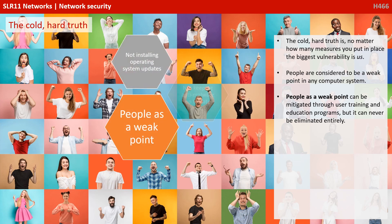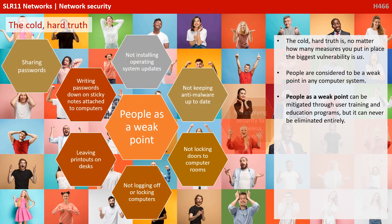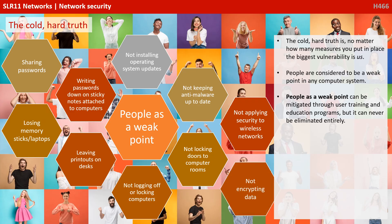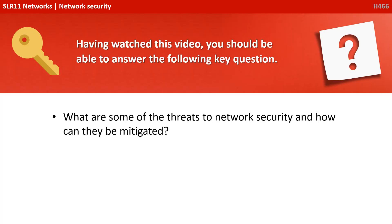Let's just take a step back here. Despite everything we've gone through, the cold hard truth is that no matter how many measures you put in place, the biggest vulnerability to a network or system is us. People are considered to be the weak point in a computer system. This can be mitigated through user training and education programs, but it can never be eliminated entirely. Having watched this video, you should be able to answer the key question: what are some of the threats to network security and how can they be mitigated?